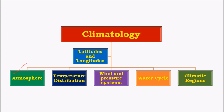In wind and pressure systems, we'll see about different kinds of winds — namely permanent, seasonal, and local — as well as core concepts like equatorial low pressure belt, polar high, and winds called easterlies, westerlies, trade winds, etc. In water cycle, we'll deal with precipitation and different forms of precipitation, including thunderstorms, tropical cyclones, and temperate cyclones.